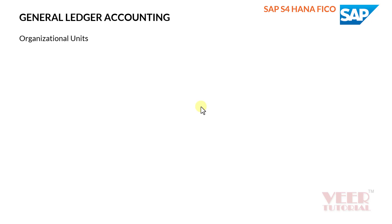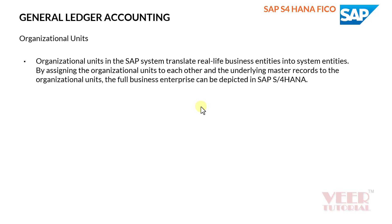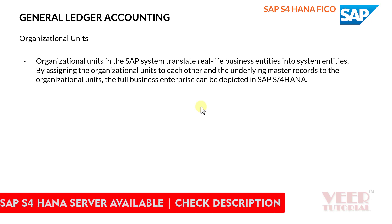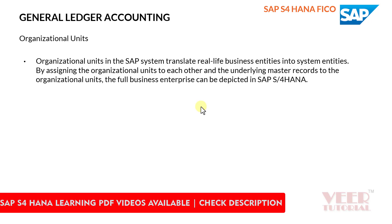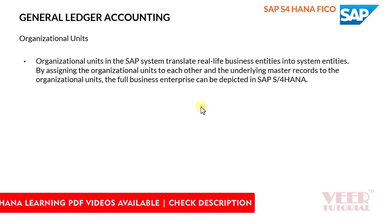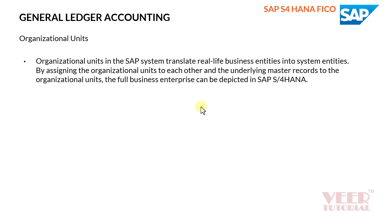In this video, we will learn about the organizational units. Organizational units in SAP system translate real-life business entities into system entities. By assigning organizational units to each other and the underlying master records to the organizational units, the full business enterprises can be depicted in SAP S4 HANA.